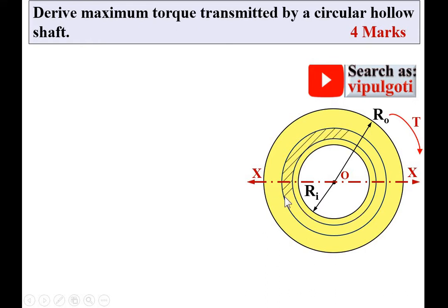This is your elemental ring for the analysis and this is the hash pattern for the ring at radius small r, and the thickness of this elemental ring is dr.